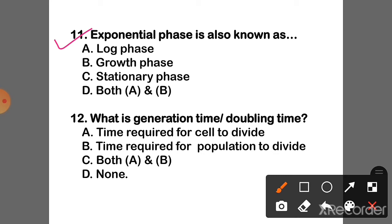Question 11: Exponential phase is also known as what? The correct answer is Option D — A and B: Log phase and growth phase.